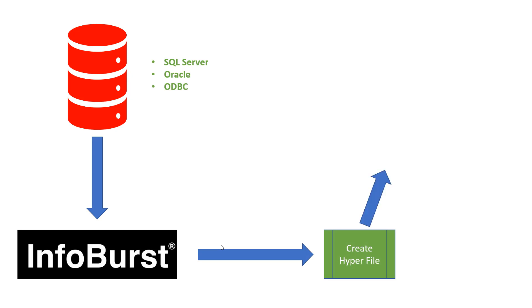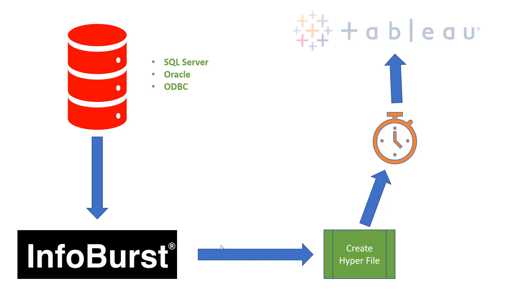Once we've got the hyper file created, we're going to set a schedule in InfoBurst and have the schedule dependent on a file being present in a certain location — so this can be when your ETL process finishes, for example. With that schedule, we'll be publishing a Tableau data extract in hyper format up to Tableau Server, and also publishing a hyper file to a network share.